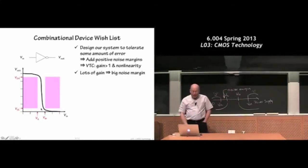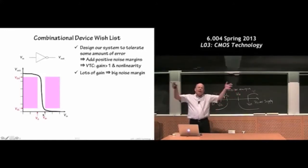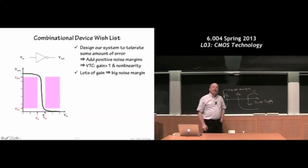Lots of gain means we can basically move VIL and VIH closer and closer together, which would allow us to create hopefully better and better noise margins.